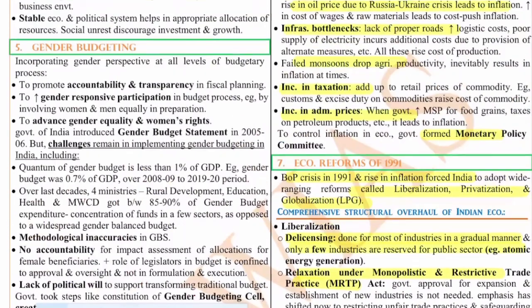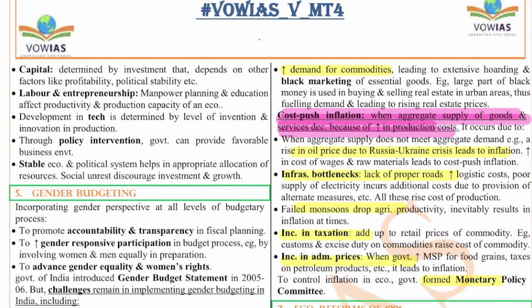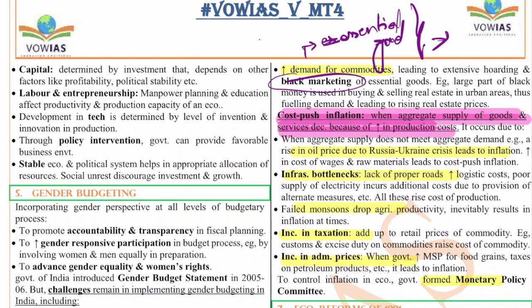Another cause of demand-pull inflation is black marketing, especially with essential goods like tomatoes and onions. Suppliers artificially inflate demand so they can sell goods at higher prices. This can also sometimes contribute to inflation.